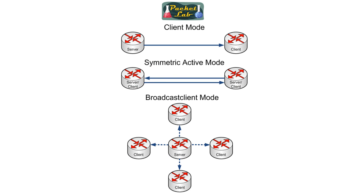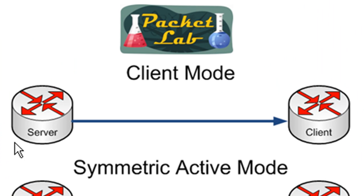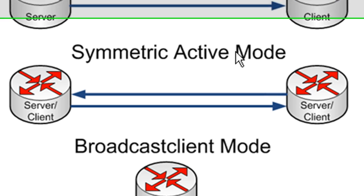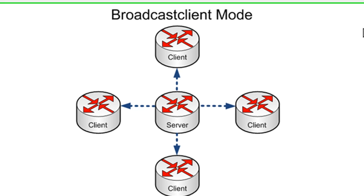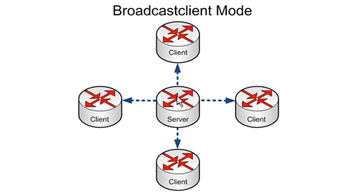Here's a quick visual of the different modes. In client mode the server updates the client with NTP information. In symmetric active mode you're essentially server and client — providing information back and forth via peering, so it's bi-directional traffic. In broadcast mode, a server broadcasts out and whoever is listening on the same network can pick up that information.